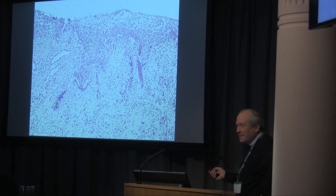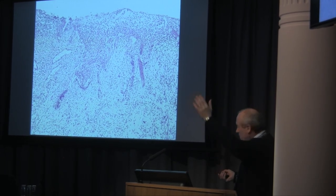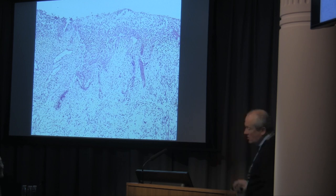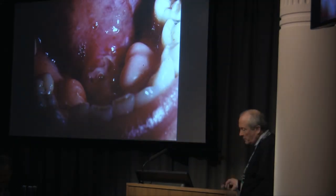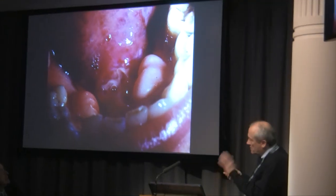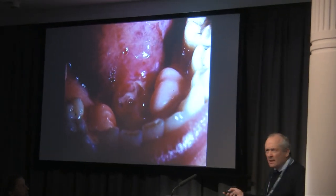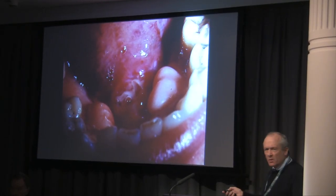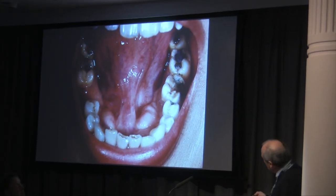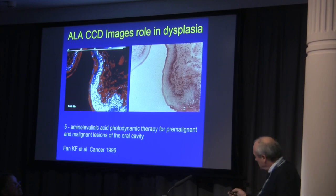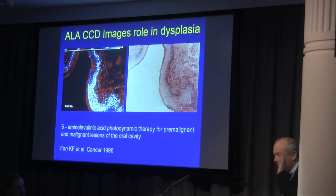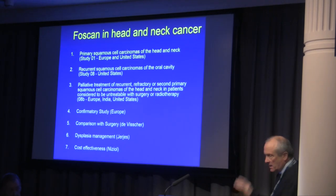We then started looking at aminolevulinic acid, which we've seen is very extensively used in skin cancer. This is a picture showing that it wipes off the epithelium, so it's quite good for these early tumours in the floor of the mouth. Cathy Fann was very much instrumental in all of this. Treated with PDT and a complete response. But the problem is it's just the epithelium, so it's not really good for invasive disease.